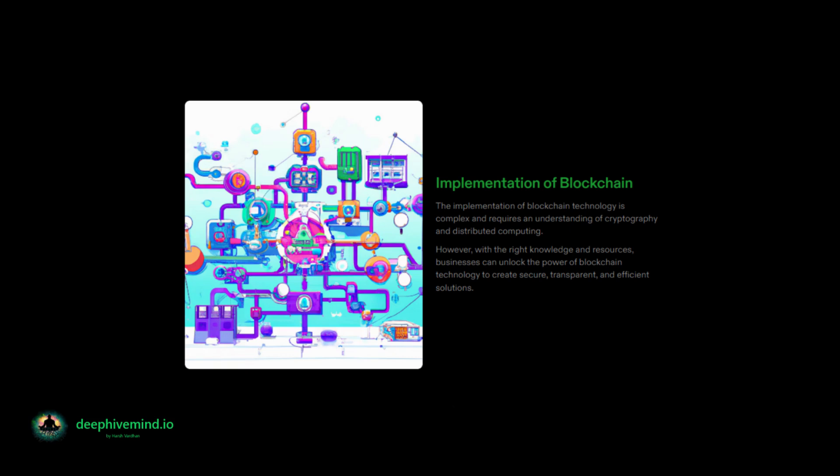Implementation: implementing a blockchain solution requires a thorough understanding of the technology and the specific use case. It involves setting up the infrastructure for the decentralized network, creating the smart contracts that govern the transactions, and developing the application or platform that will interact with the blockchain. It also requires the selection of an appropriate consensus mechanism and other parameters.